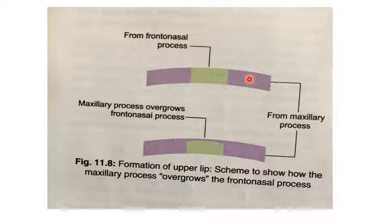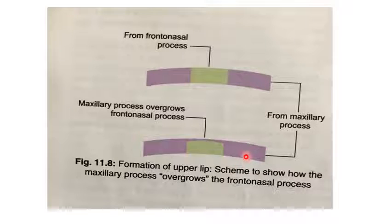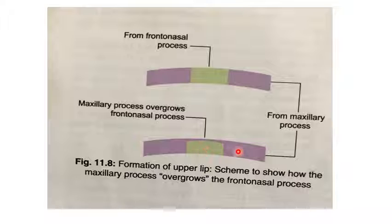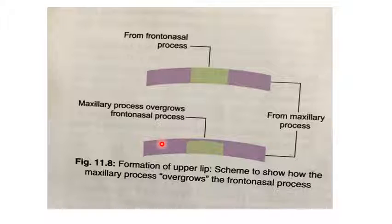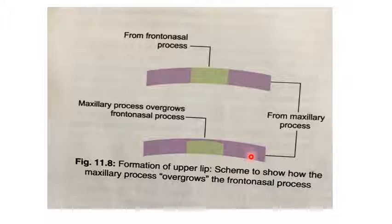The diagram shows the upper lip with its lateral part and median part. The mesodermal basis of the lateral part is derived from the maxillary process, while the mesodermal basis of the median part — forming the philtrum — is derived from the frontonasal process. The skin (ectoderm) of the maxillary process overgrows and meets with the ectoderm of the opposite maxillary process in the midline, which is why the skin is derived from the maxillary process. The mesodermal basis of the middle part is derived from the frontonasal process.